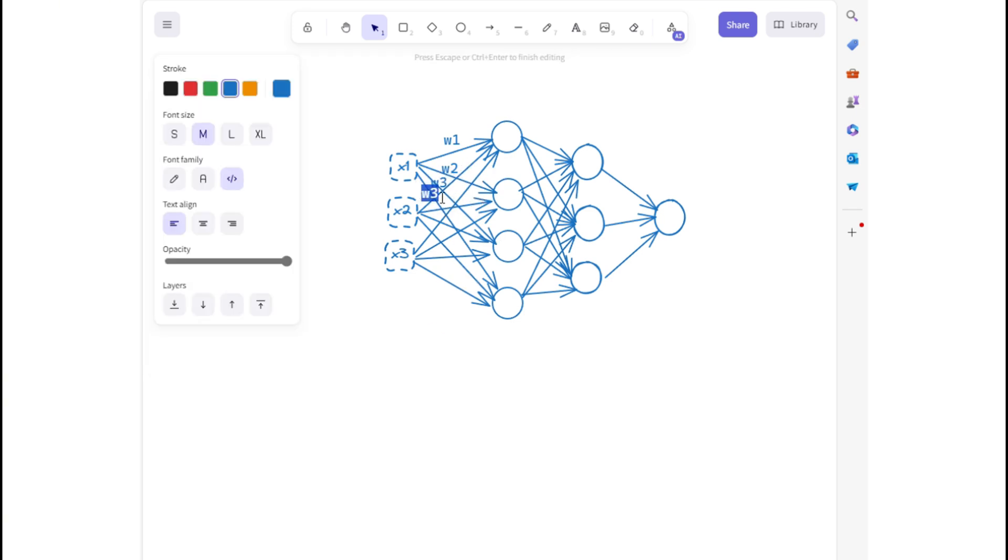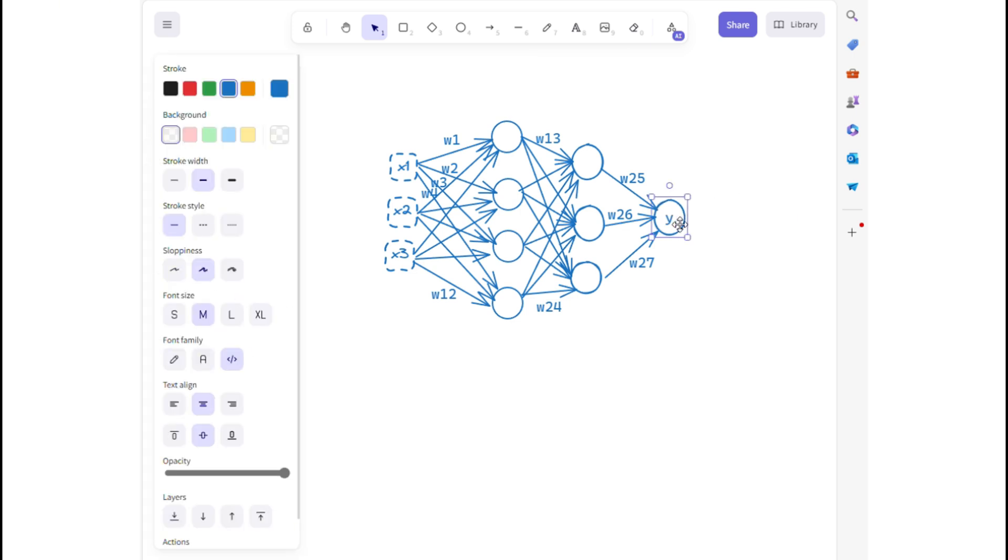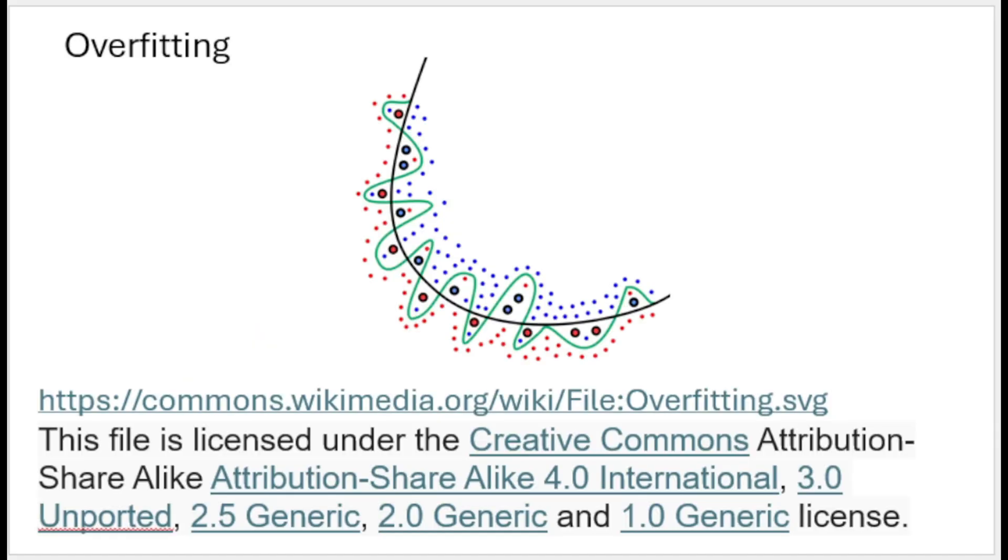If you have too many parameters, that means too many weights relative to the number of observations, which allows them to model the training data extremely accurately, but it makes them too complex to generalize to new data.